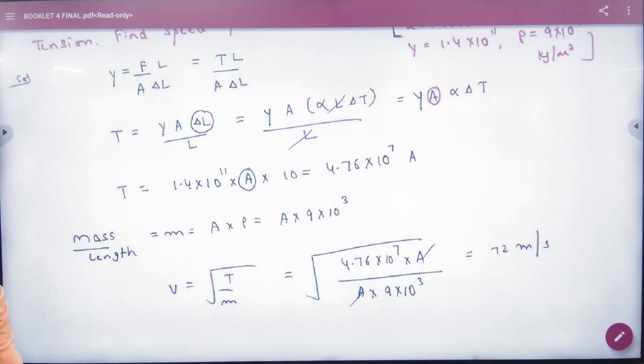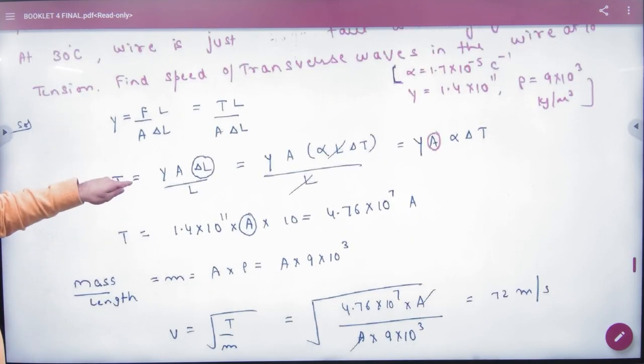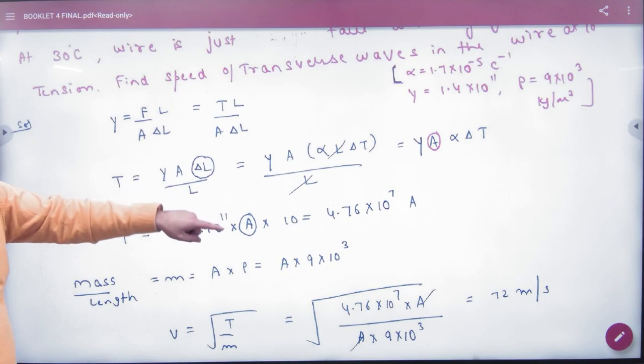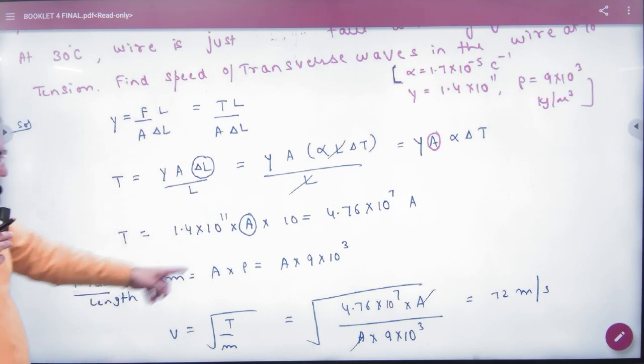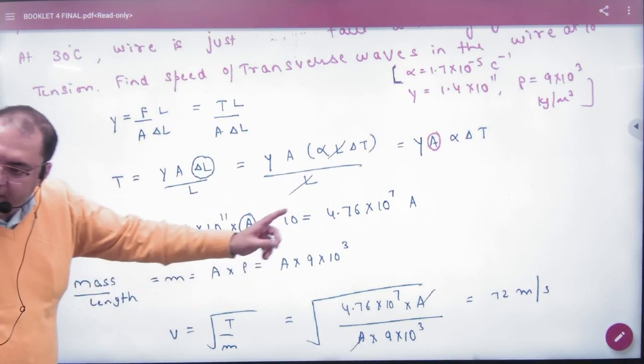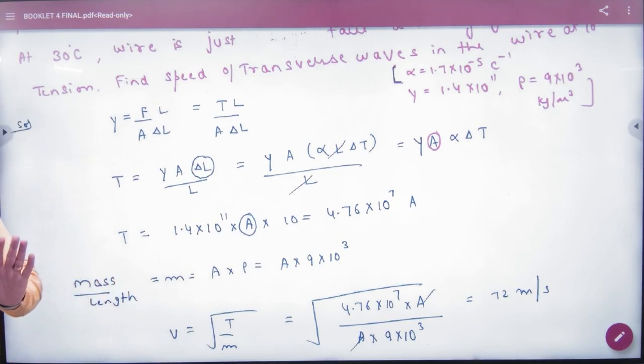To is formula mein tension ko area ki form mein put karo. Mass per unit length ko bhi area ki form mein put karo. Area to area cancels, answer. To trick samajh mein aa rahe hai: Y se kaise T nikala, delta l alpha ki form mein nikala, mu ko likha area into density, area area under ja ke cancel. To idea samajh mein aa rahe hai ki kaise in rules ko lagaye hamne.